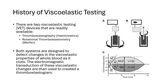In TEG, the cup is rotating around the sensor, and in ROTEM the sensor rotates in the cup. As the viscoelastic strength of the cup's contents increases as the blood begins to clot, the changes in the rotational forces acting in the wire are sensed, and this information is transmitted by an electromagnetic transducer and then processed to create a thromboelastogram, which is then reported in real time.